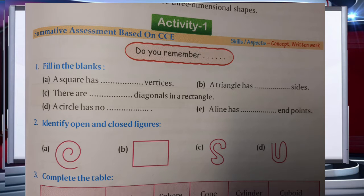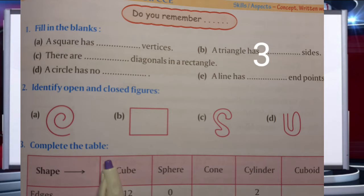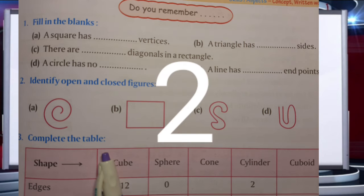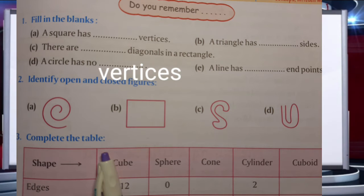So now let us start with activity one. A square has four vertices. A triangle has three sides. There are two diagonals in a rectangle. A circle has no vertices.